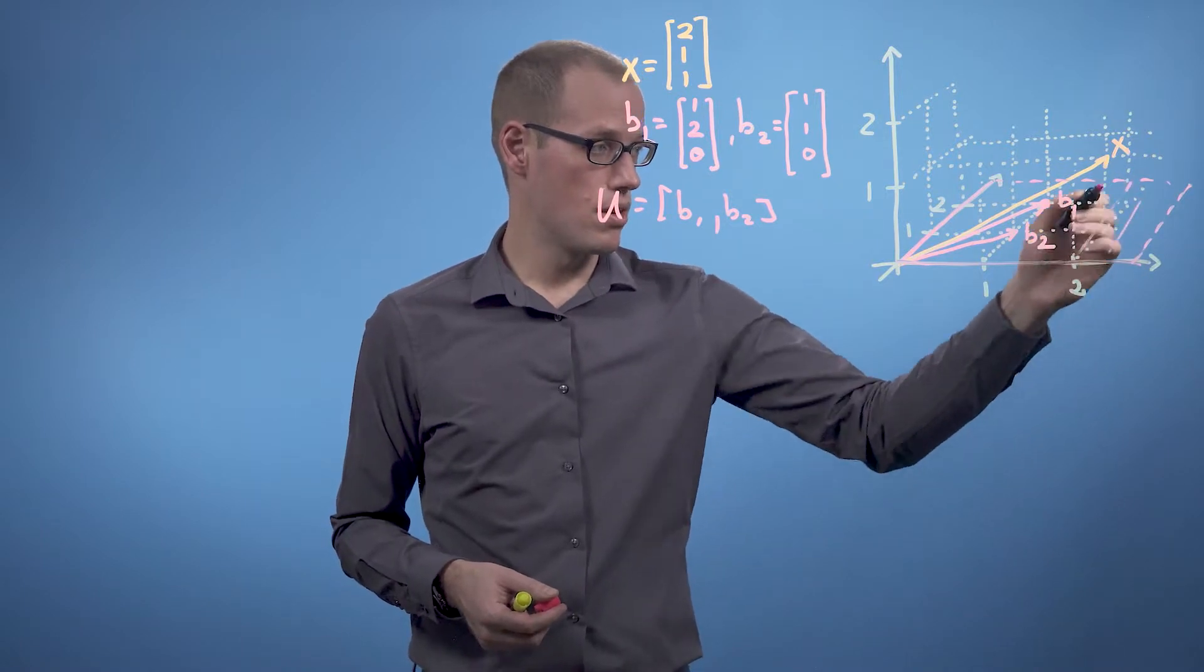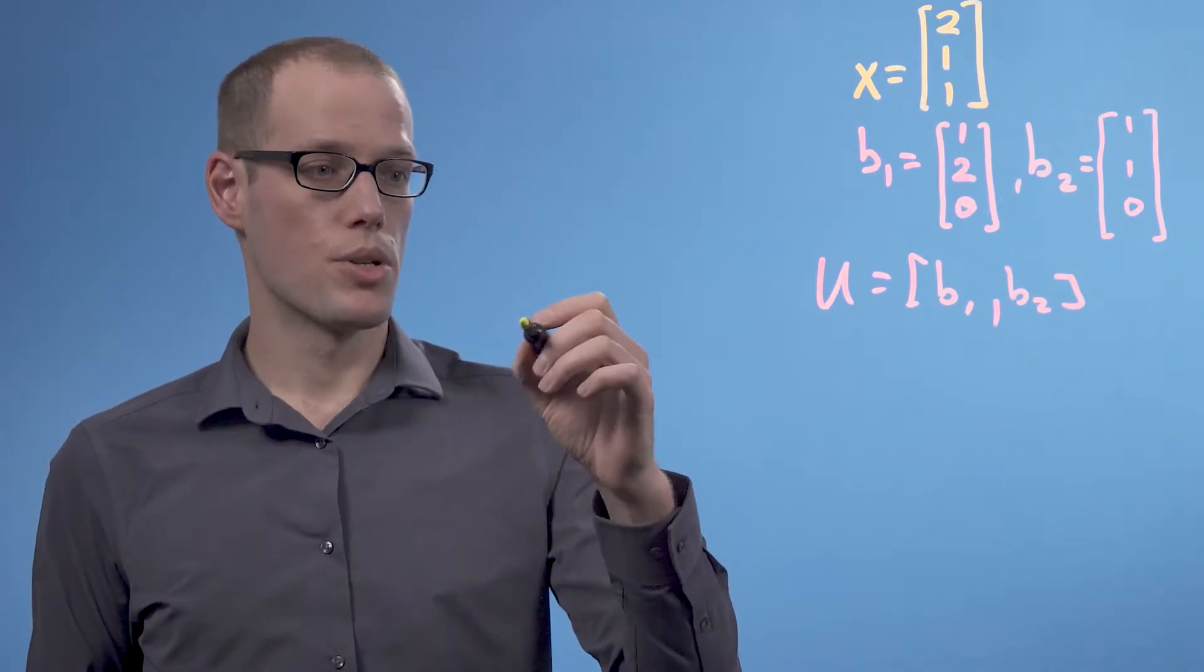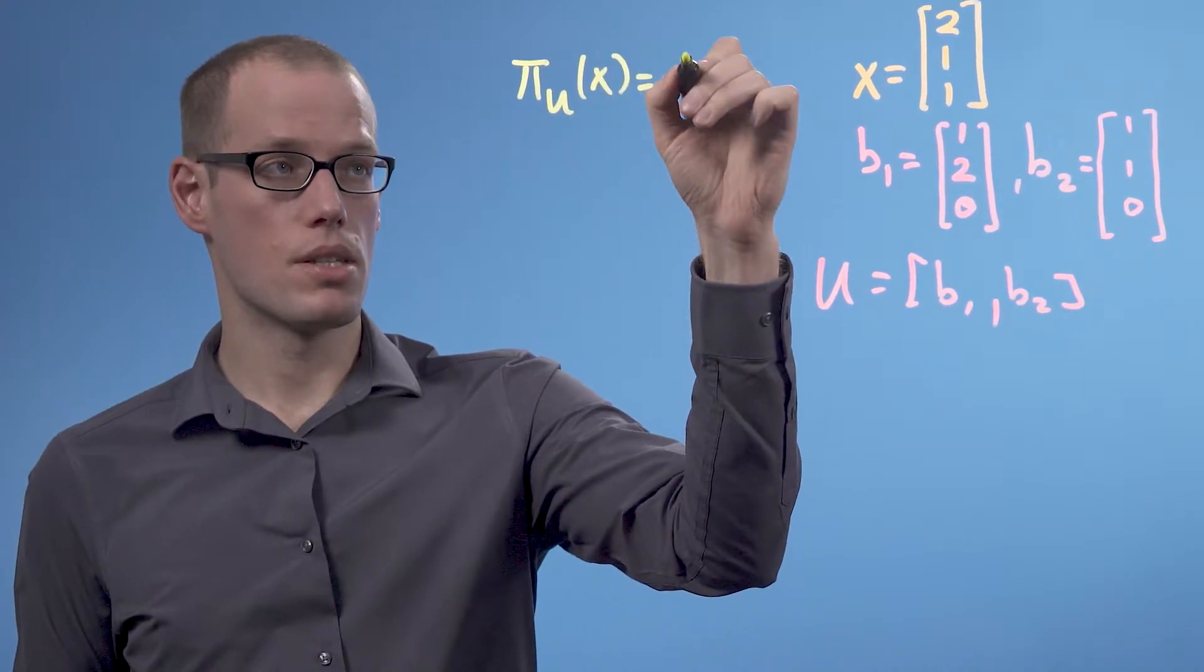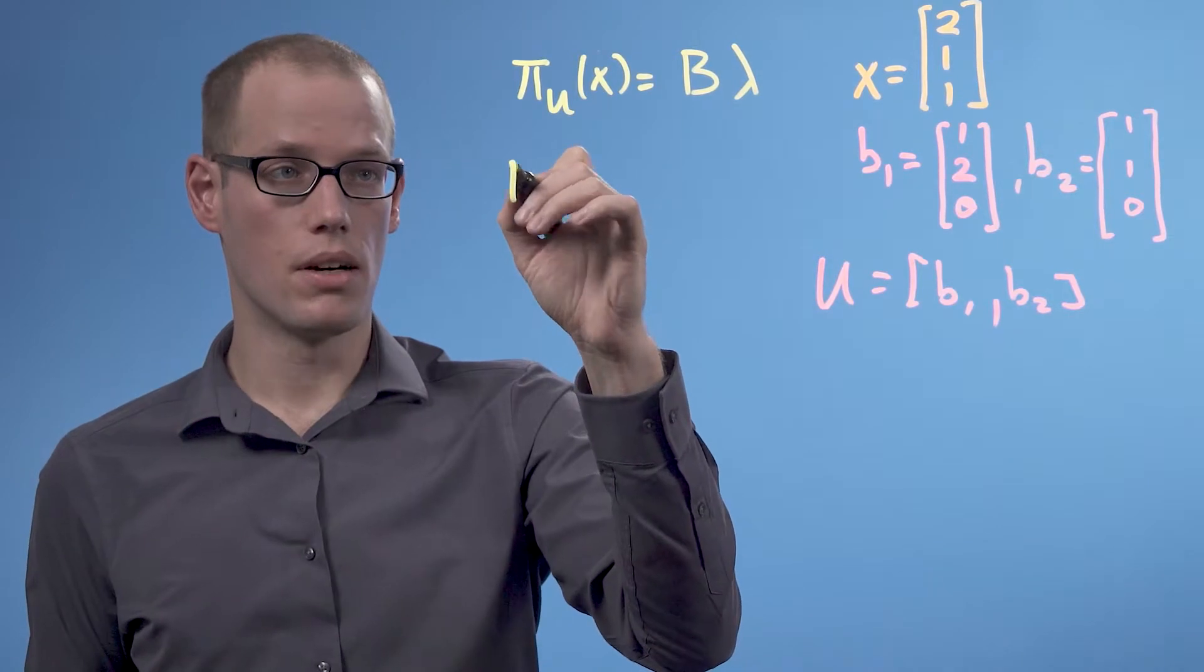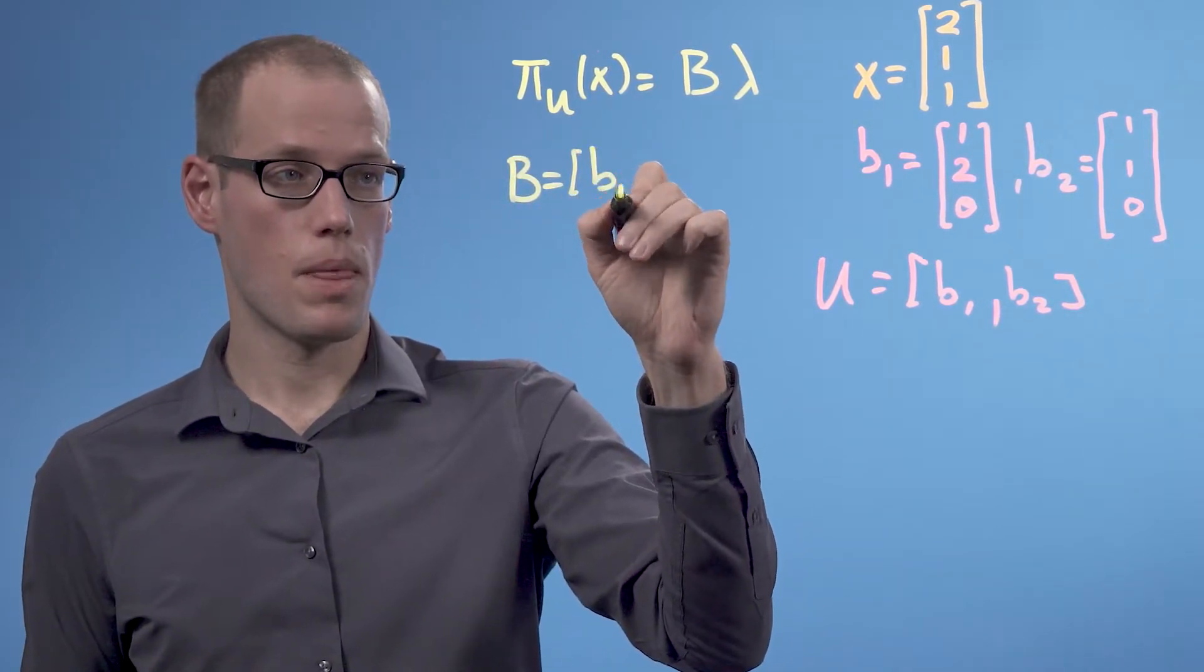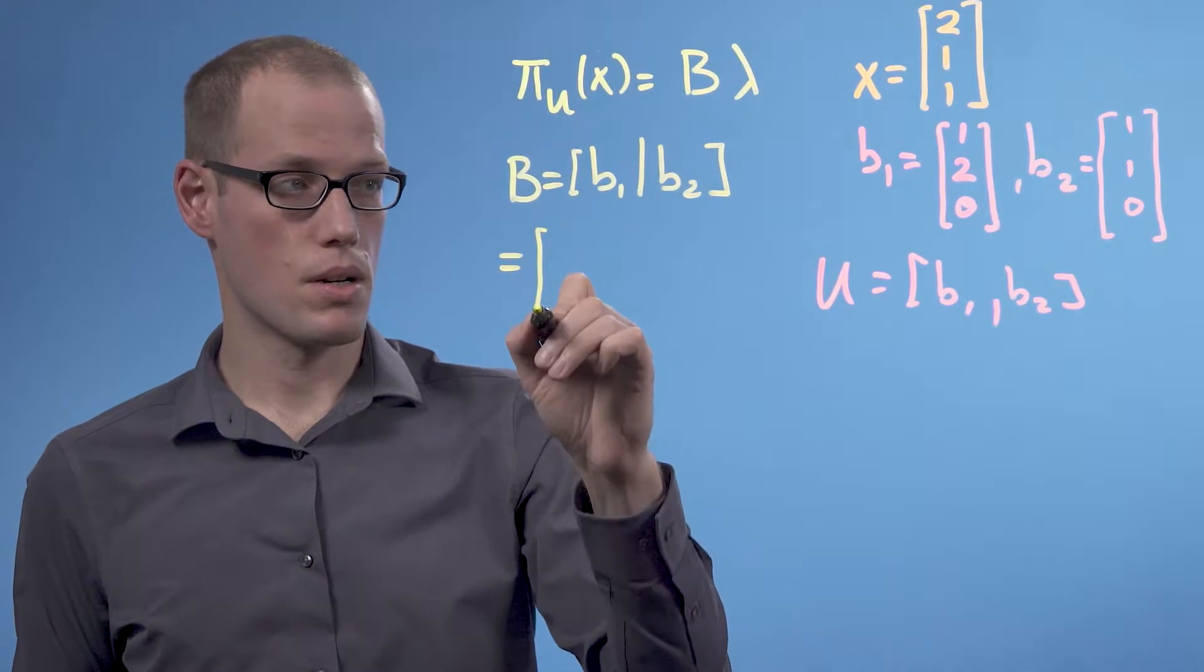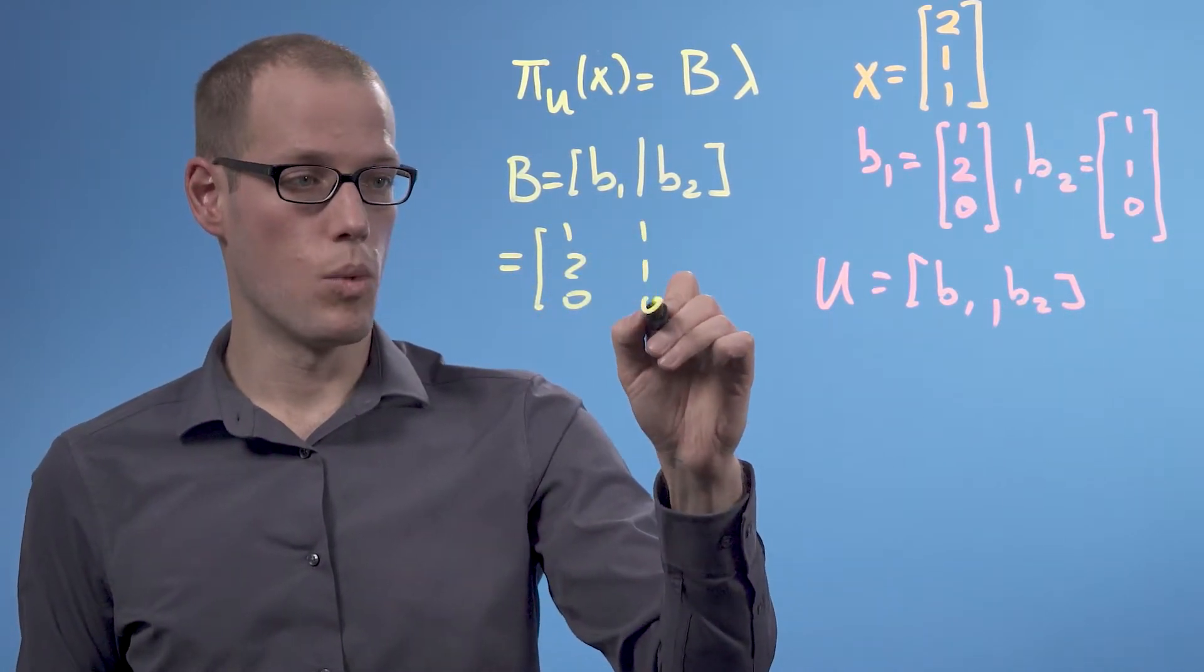The orthogonal projection was given as pi u of x is b times lambda, and we define b now to be b1 and b2 concatenated, which is 1, 2, 0, 1, 1, 0.